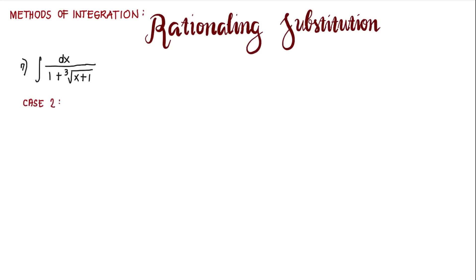What's given is the nth root of ax plus b, and there is no other term containing a radical sign. The index is 3, so we let u be equal to the cube root of x plus 1. We can raise both sides to the power of 3 to eliminate the radical sign.